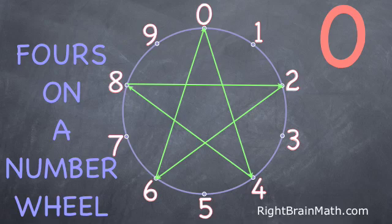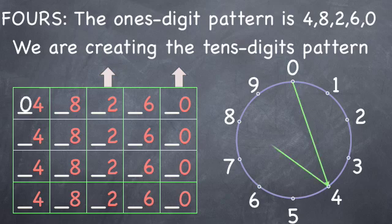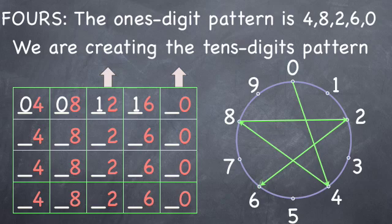Anytime we go past 0 or reach 0, the tens digits would have gotten one bigger. Let's look at a table that shows the repeating ones digits in orange. Here we can create the tens because the tens go up at 2 and 0. The pattern is: same, same, same, up, same, up. 0, 0, up to 1, 1, and up to 2, and 20 is 5 times 4.